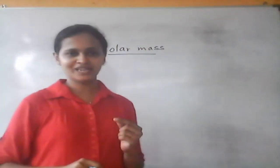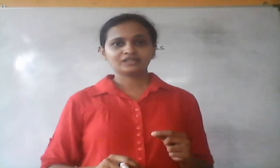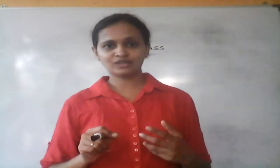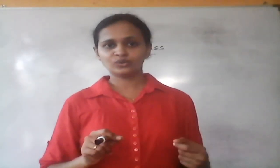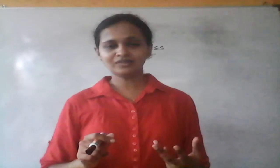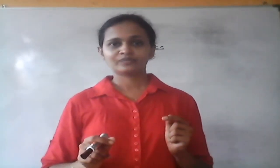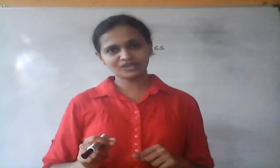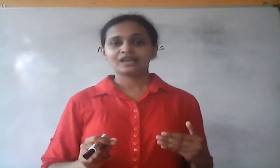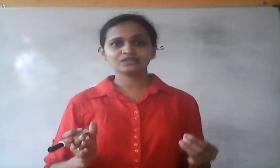Now the molar mass. You learnt that if you take a mass equal to the relative atomic mass of a particular element in grams, or a mass equal to the relative molecular mass of a molecule in grams, that contains a constant number of atoms or molecules. That constant number was known as Avogadro constant, and that particular amount was known as one mole.